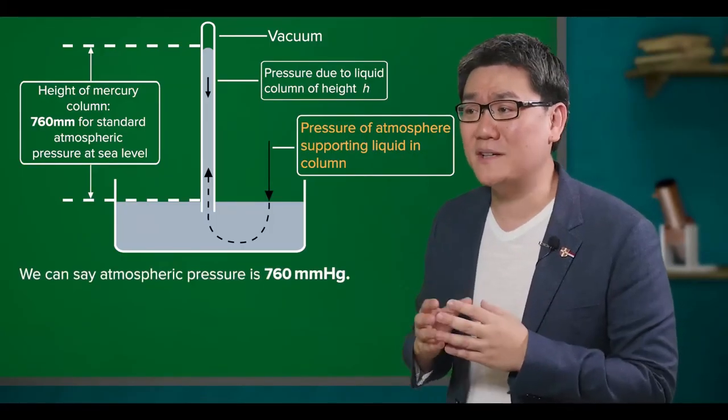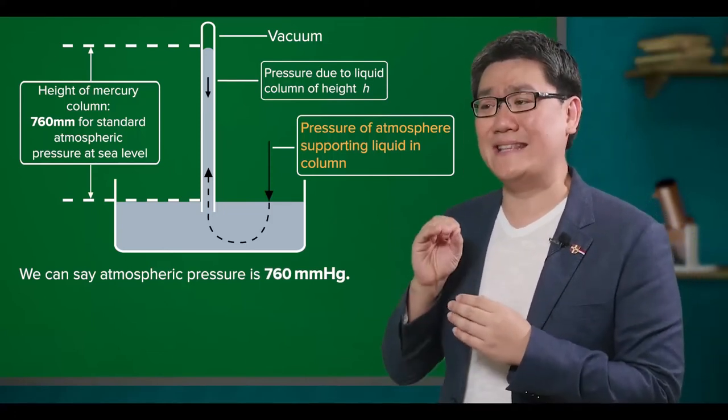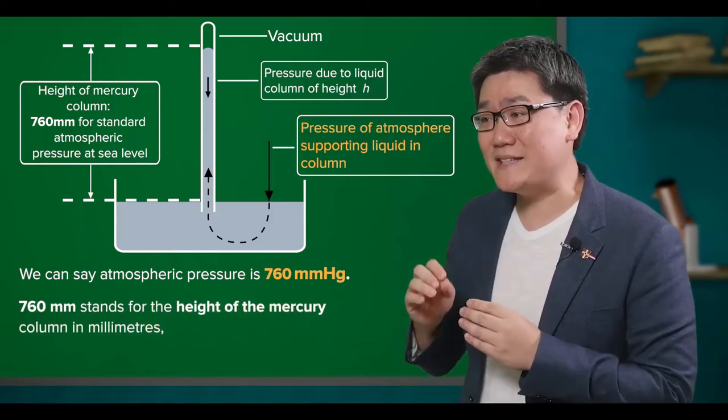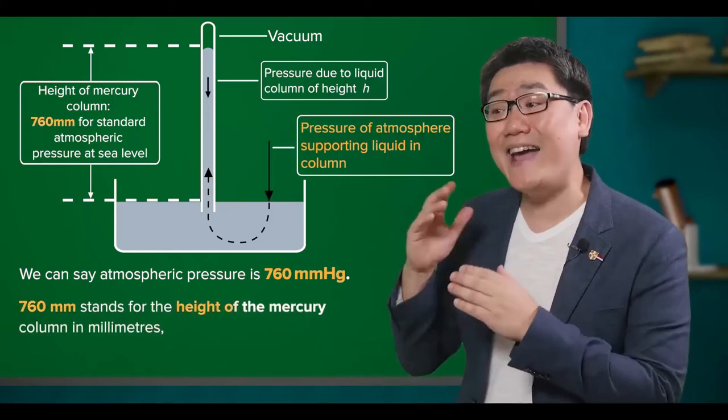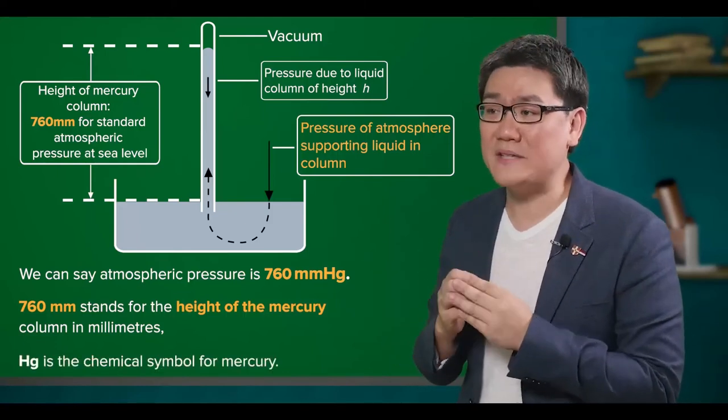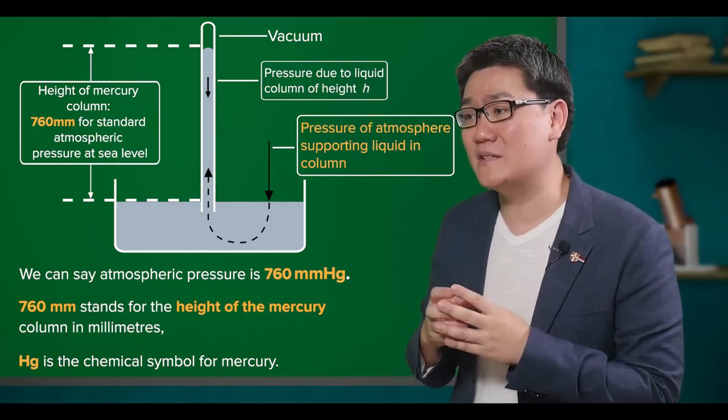So, from the barometer, we can say atmospheric pressure is 760 mm Hg. 760 mm Hg stands for the height of the mercury column in millimeters, whereas Hg is the chemical symbol that represents mercury.